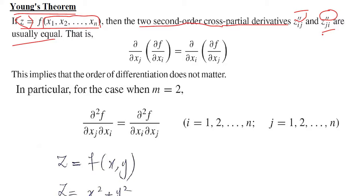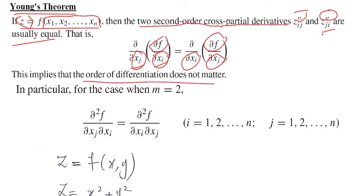These two cross partial derivatives are usually equal in mathematics. Their equality can be missing in some situations in broader mathematics, but in our economic analysis it will be limited to those cases where they are equal. If f was differentiated with respect to xi and then with respect to xj, versus differentiated with respect to xj primarily and then with respect to xi — the order is reversed.